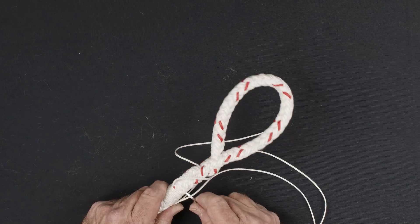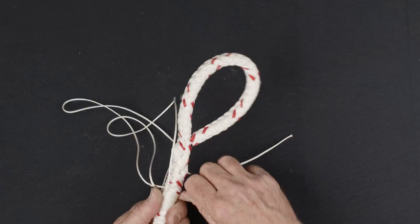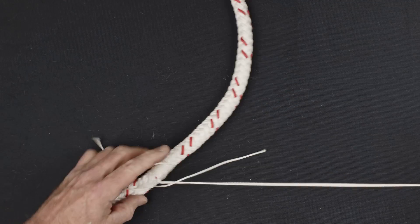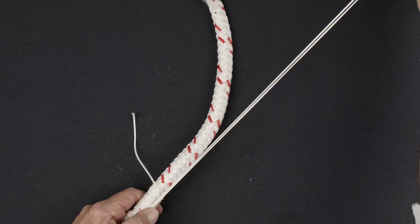Lay the twine parallel to the rope and pass the needle straight through the rope at the top of the whipping. Lay the twine parallel to the rope.